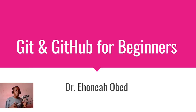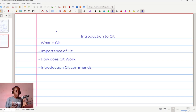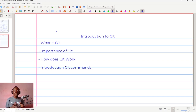Welcome to another video in our series on Git and GitHub for beginners. I'm Dr. Onya Obed, and in this video we are going to look at an introduction to Git — what git is, the importance of git, and how git works. In the previous video we looked at version control systems and the two major types: centralized and decentralized. Git is an example of the decentralized version control system.